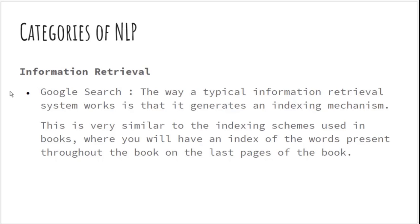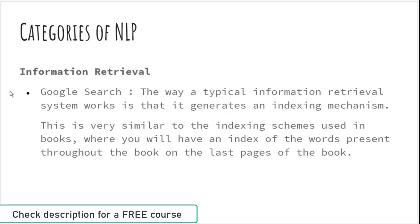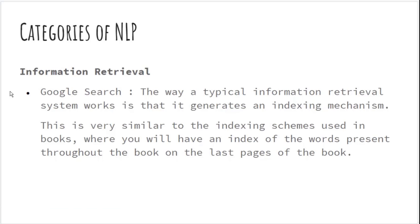Information retrieval is another category, and an example is Google Search. A typical information retrieval system works by generating an indexing mechanism, very similar to the indexing scheme at the end of a book, where you find a phrase and then find the page number. Google Search works similarly.